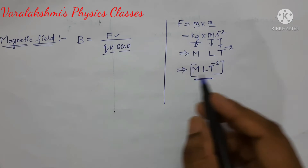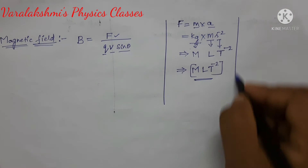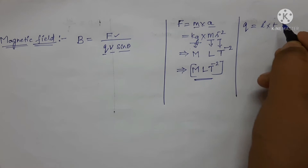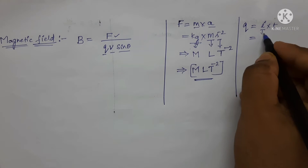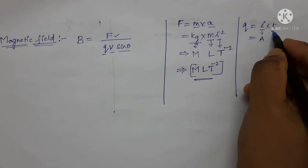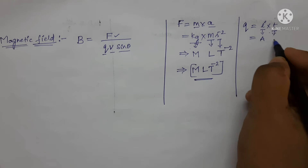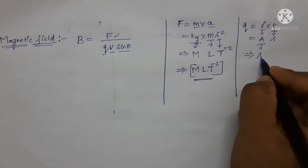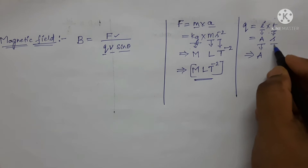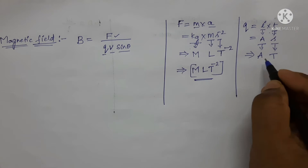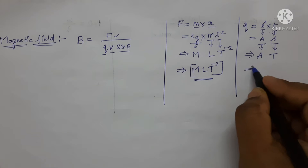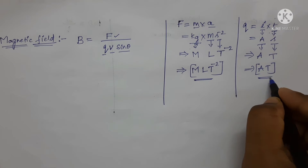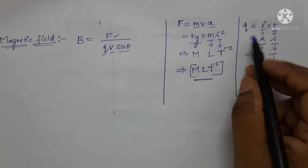Now let us find the dimensional formula for charge. Charge equals current multiplied by time. The SI unit of current is ampere and for time it is second. Writing the dimensions: ampere is expressed as capital A and second as capital T. So the dimensional formula for charge is [A T].